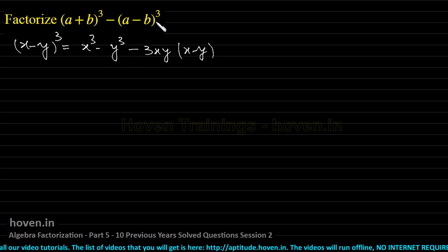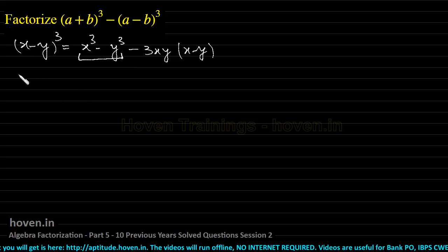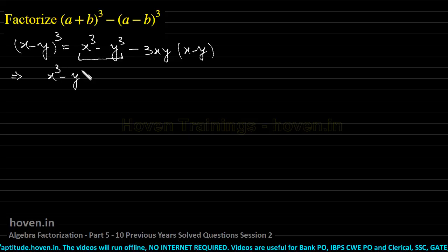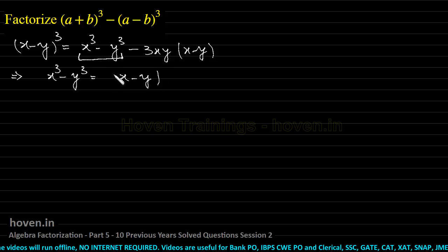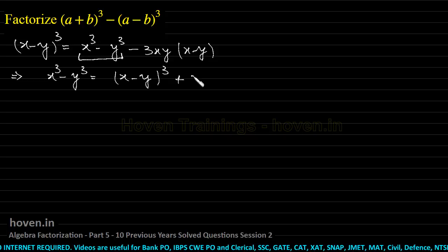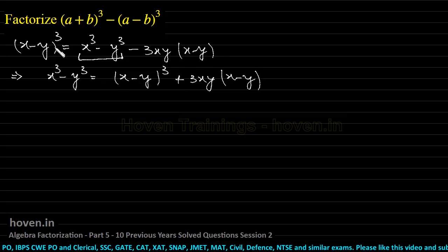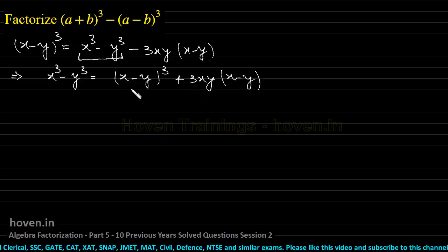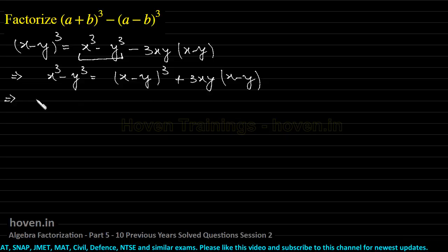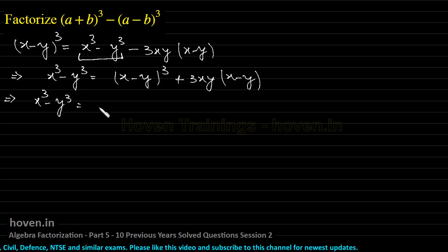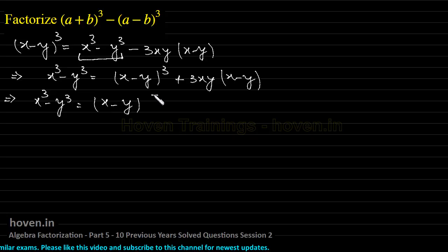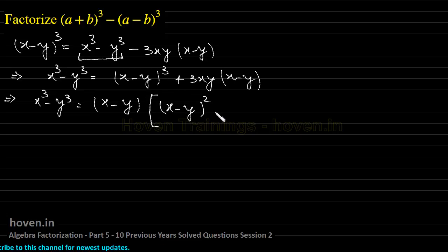We recall the identity: (x−y)³ = x³−y³−3xy(x−y). Rearranging, which implies x³−y³ = (x−y)³ + 3xy(x−y). We can see that (x−y) is a common factor, so x³−y³ = (x−y)[(x−y)²+3xy]. This rearranged identity will help us proceed.